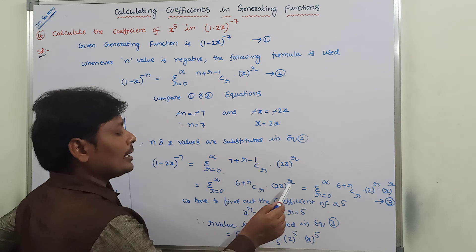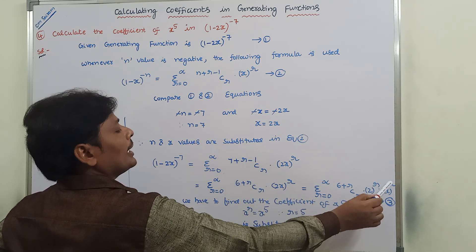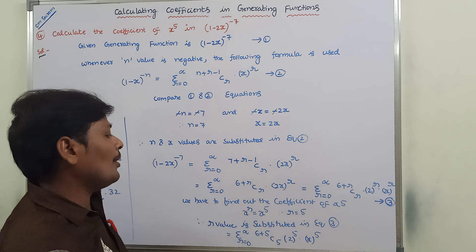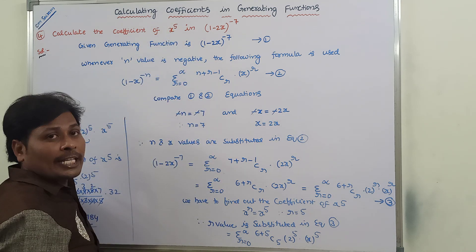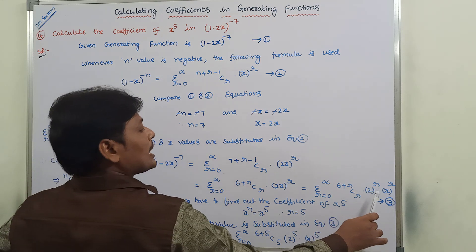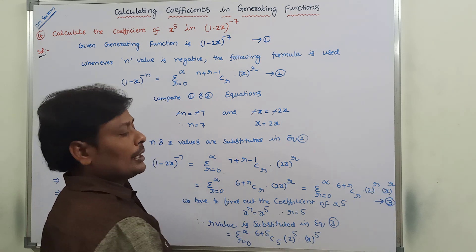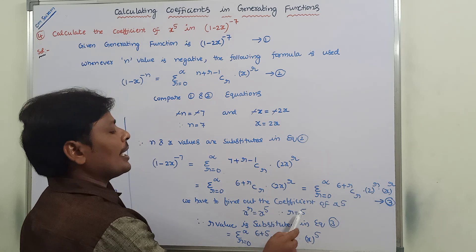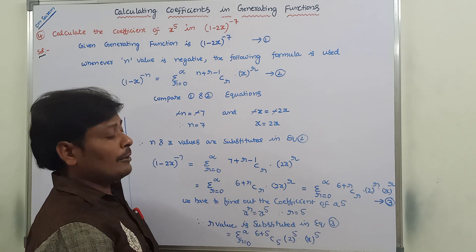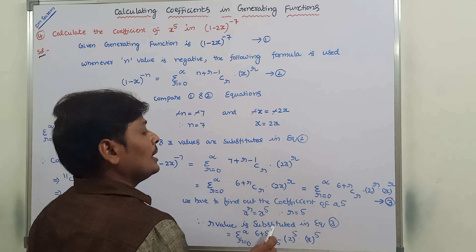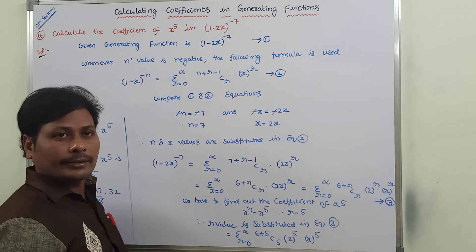In the place of x, 2x is substituted, giving 2x power r. This simplifies to sigma, r is equal to 0 to infinity, (6 plus r) C r, (2x) power r. Here, (2x) power r can be written as 2 power r into x power r. To find the coefficient of x power 5, we compare x power 5 with x power r, giving r equal to 5.